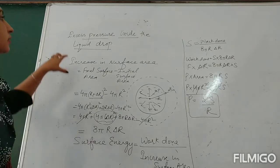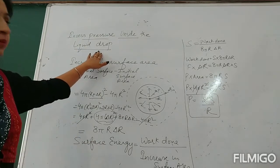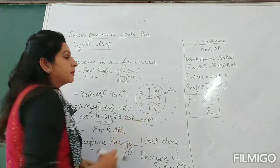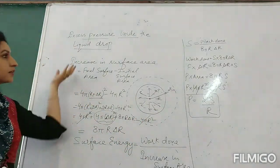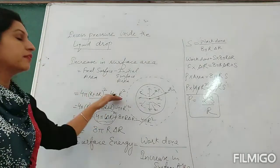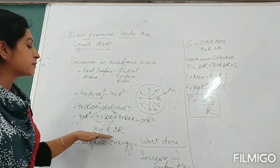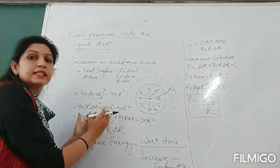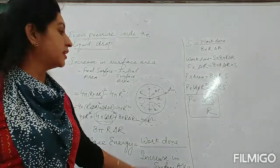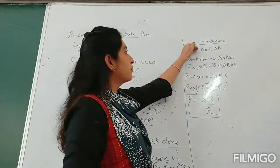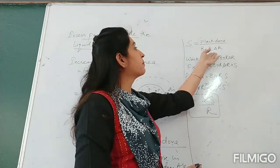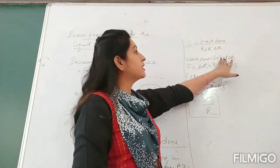Let me recap what we have done. We calculated excess pressure inside the liquid drop — that excess pressure exists because of its curved surface. Due to that excess pressure the radius expanded to R plus delta r. We calculated the increase in surface area by subtracting initial from final surface area, getting 8πR·δr. The δr² term was neglected. Then, since surface energy equals work done over increase in surface area and surface energy numerically equals surface tension, work done equals S × 8πR·δr.